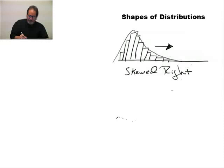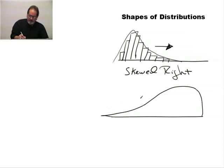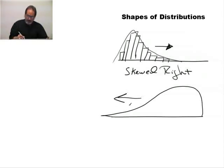We would refer to this shape as being specifically skewed right. Now, obviously, if we did a histogram and it went the other way — the general shape had a tail going to the left — we would call that skewed left.